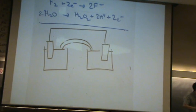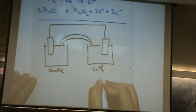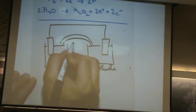Okay, there's your standard template. You'd write anode here, cathode here. You'd write salt bridge here.